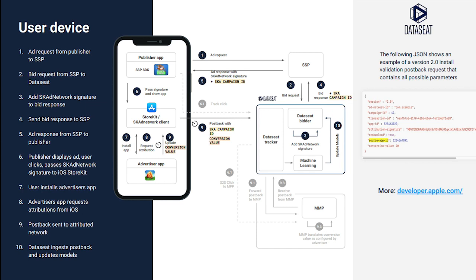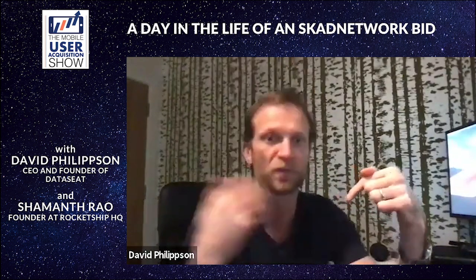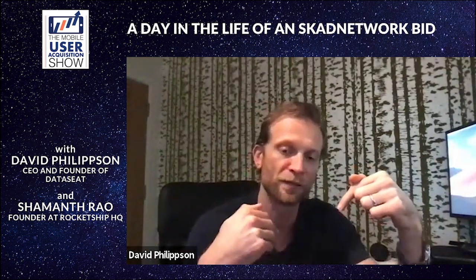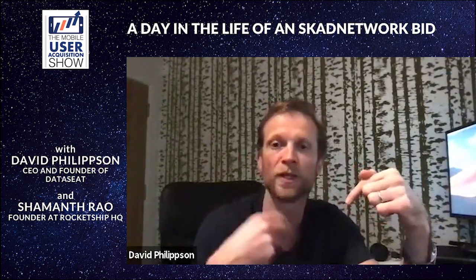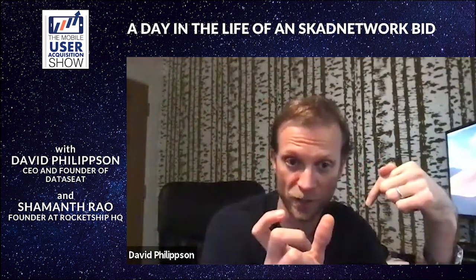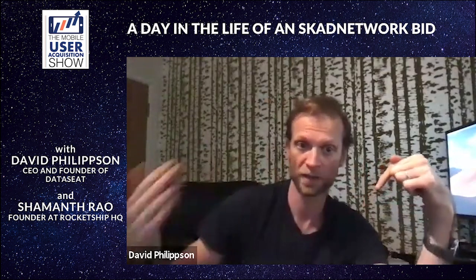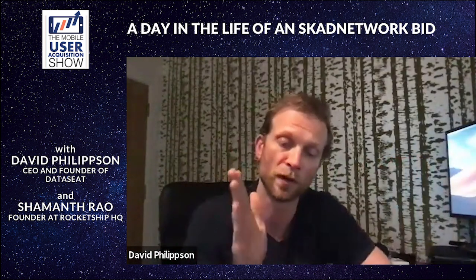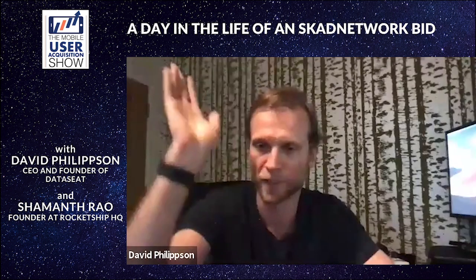The important thing to note — and this is where it becomes different — is each of the demand side partners have registered with Apple, registered with SKAdNetwork. Each demand partner has their own unique signature. So DataSeat has an SKA signature. The bid request comes through to us and we'll be using our contextual algorithms to decide how much to bid on that particular impression. Let's say we decide to bid $12 for that video impression. What is different now is on our bid response, we will be including two new variables.